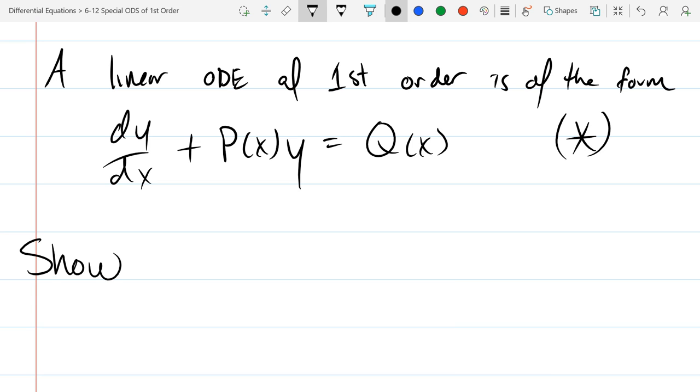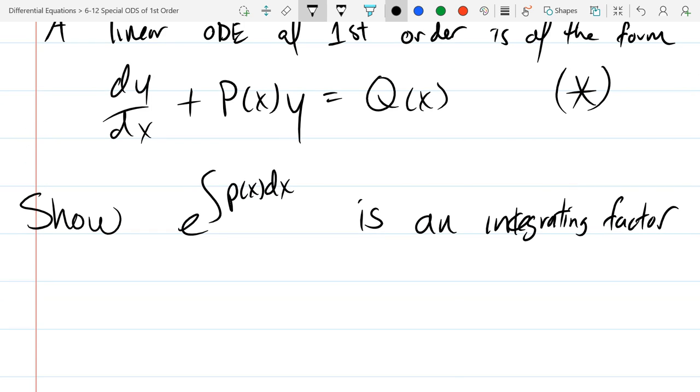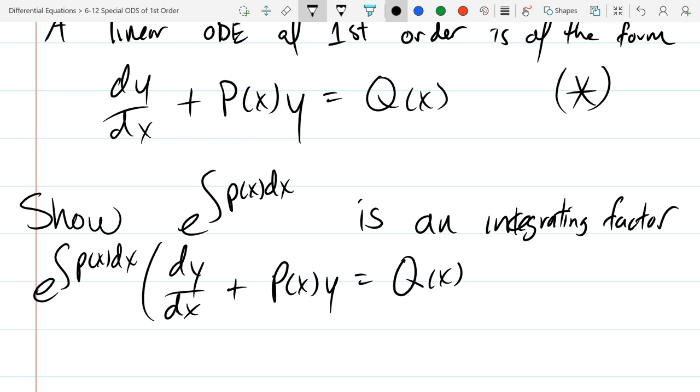I want to show e to the integral px dx is an integrating factor. What in the world does it mean to be an integrating factor? What did we do with integrating factors before? You multiply them by the ODE. So the question is, if I multiply by this integrating factor, does it turn our ODE into an exact ODE? The answer is yes, but we need to show why it does. So we're going to do so by multiplying e integral px dx times dy over dx plus pxy equals qx.